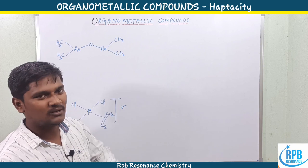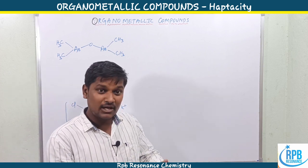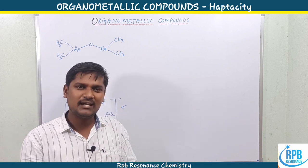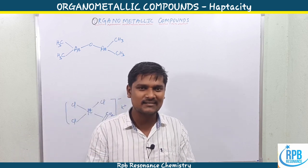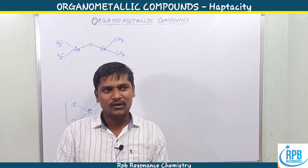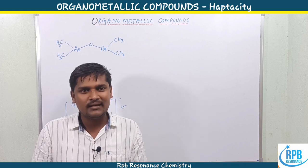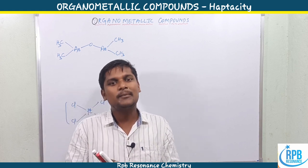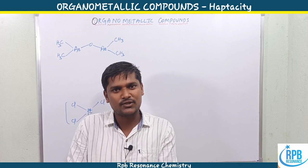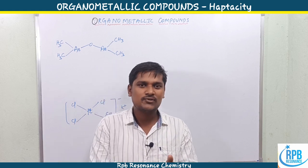Today I'm going to deal with organometallic compounds interaction. Generally, organometallic compounds interaction involves the 18 electron rule. But before going to the 18 electron rule, we need some basic concepts which are needed to deal with the 18 electron rule.